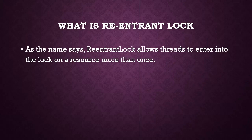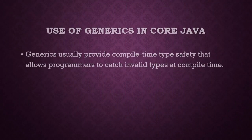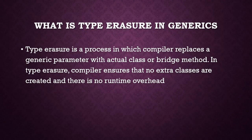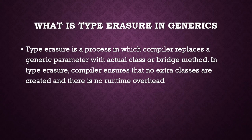Use of generics in Core Java: generics provide compile-time type safety that allows programmers to catch invalid types at compile time itself — that is the main advantage. What is type erasure in generics? Type erasure is a process in which the compiler replaces a generic parameter with an actual class or bridge method. The compiler ensures that no extra classes are created and there is no runtime overhead.